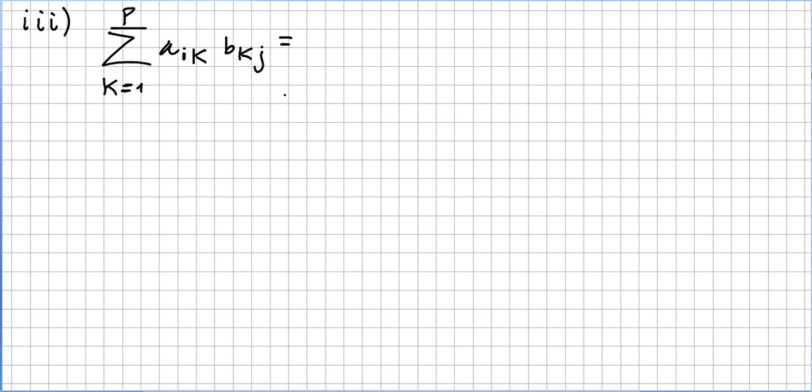Another very handy example: summation from k equals 1 to p of a_ik b_kj. So the variation is from k equals 1 to p, so this i here will stay as it is, and this j here will stay as it is too.